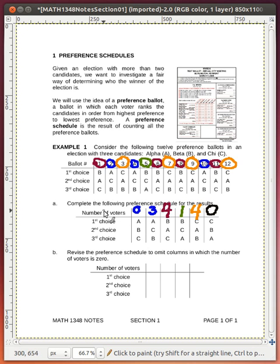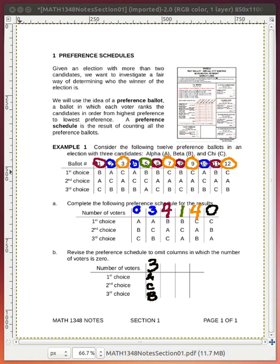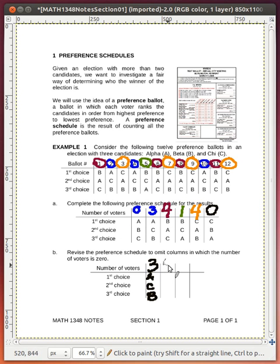So usually to complete a schedule, we revise the preference schedule to eliminate these columns that have zero in them. And so down here, we're interested in three people have the choice of A, C, B, and four people had the choice of B, A, C.